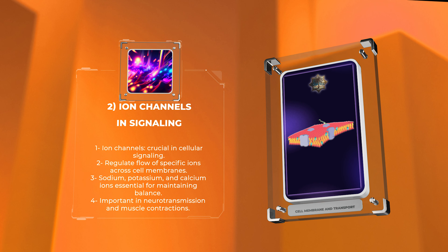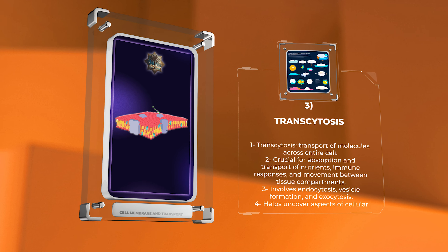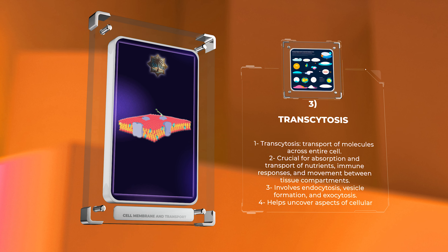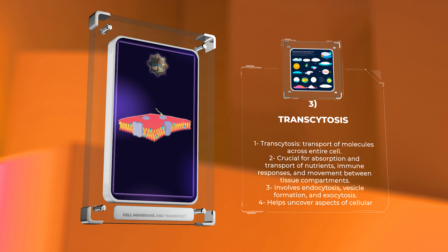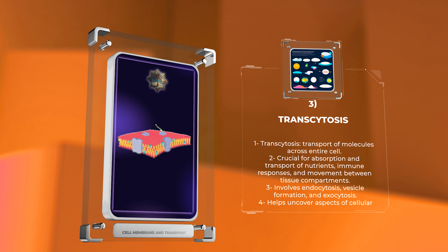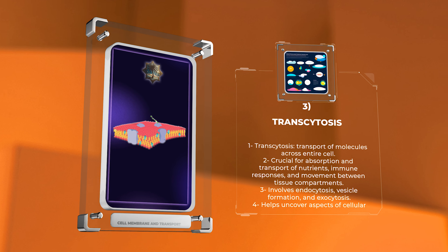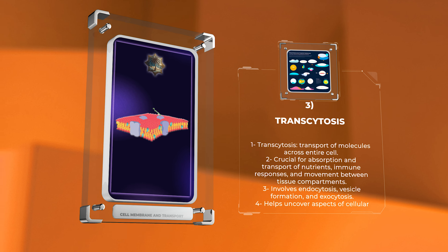Transcytosis is a cellular process that involves the transport of molecules or macromolecules across the entire cell from one side to the other. This mechanism plays a crucial role in the absorption and transport of nutrients, immune responses, and the movement of molecules between different tissue compartments. Transcytosis involves endocytosis, transport vesicle formation, and exocytosis, allowing substances to cross the cell barrier and reach their intended destination.